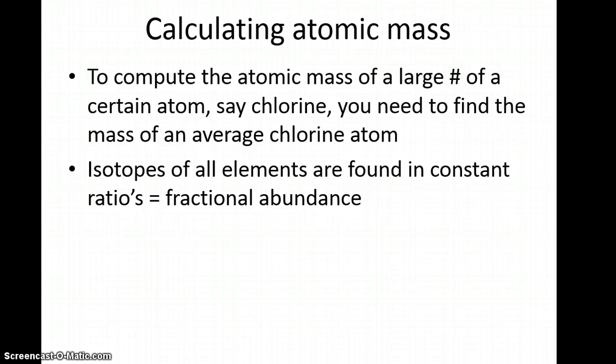The atomic mass is the average of all isotopes for that element. Isotopes of all elements are found in constant ratios known as fractional abundance. Sometimes it's written as a fraction, but most of the time it's written as a percent.